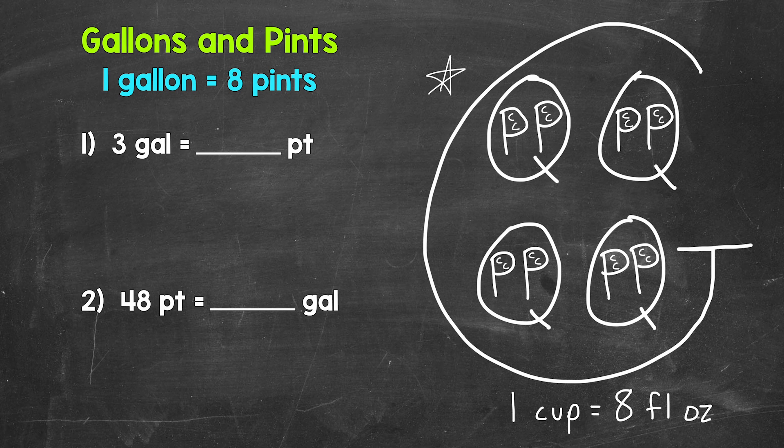Each gallon equals eight pints. So we have eight pints, eight pints, eight pints. So we need to do three times eight. And that's how we convert from gallons to pints. We multiply by eight. Three times eight gives us 24.